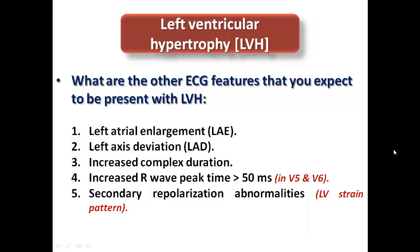Other ECG features expected in patients with LVH include left atrial enlargement (P-mitrale) if diastolic function is impaired, left axis deviation (axis between -30 to -90 degrees), and some increase in QRS duration because ventricular depolarization would be slightly impaired. Left ventricular hypertrophy is a pathology caused by pressure overload on the left ventricle, leading to increased wall thickness and impairment of ventricular depolarization.